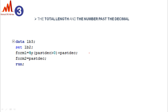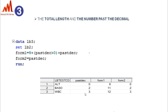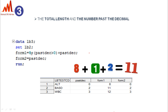The variable form1 gives the total numeric length — if a past decimal value is present, it contributes a value of one for the decimal point, and adding the past decimal values gives form2. The past decimal values are three, two, and zero. Form1 accounts for the dot character (value of one) plus the past decimal digits, so for example form1 equals 11 for one case, and form2 equals the past decimal value.